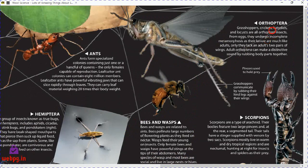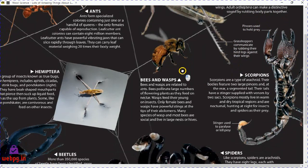Grasshoppers, crickets, katydids, and locusts are all Orthoptera insects. From eggs they undergo incomplete metamorphosis, as their larvae are much like adults except they lack an adult's two pairs of wings. Adult Orthoptera can make distinctive sounds by rubbing body parts together.